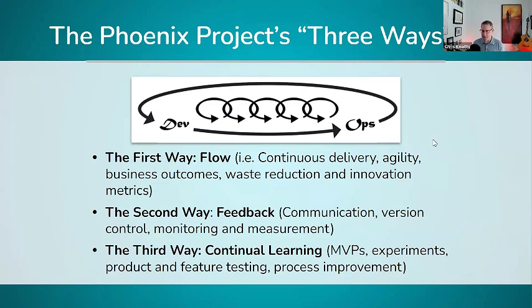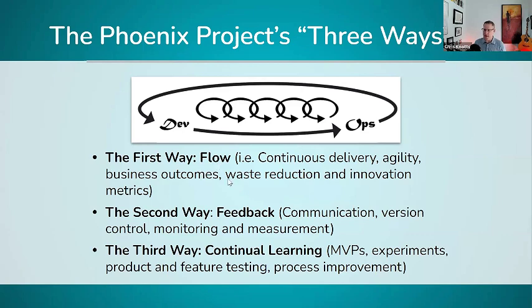The Three Ways as Gene presents them: the first way is Flow, the second is Feedback, and the third is Continual Learning. They sound a little soft and abstract, but Gene presents high-level techniques for implementing ways to manage these things. When he talks about the first way — Flow — we're talking about how CI/CD-style work reduces batch sizes and gets segments of work flowing along much more frequently and in much smaller sizes, so we can do things more continuously rather than in a waterfall fashion.